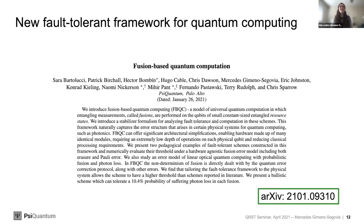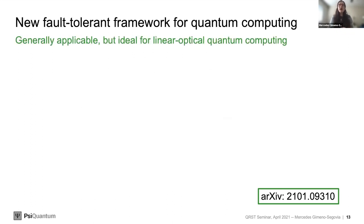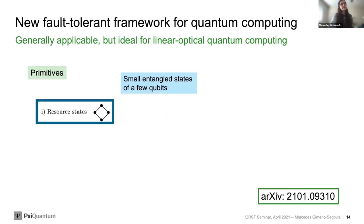We have been working on a new fault-tolerant framework for quantum computing for a while, and published a paper in January on arXiv on this topic — full details are available there. Interestingly, although the framework was inspired by photonics, it is generally applicable to many platforms. The framework has key primitives. The first primitive is a resource state: small entangled states of a few qubits with constant size for a given architecture. We focus on stabilizer states because most well-studied error correcting codes use the stabilizer formalism.